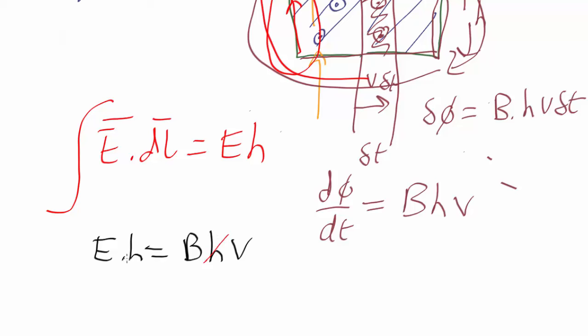The h's cancel. So we find that the electric field equals v, the velocity, times the magnetic field, which is very interesting.